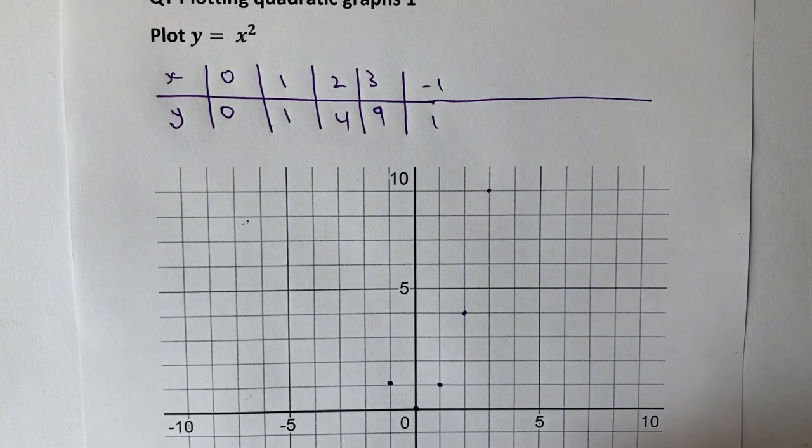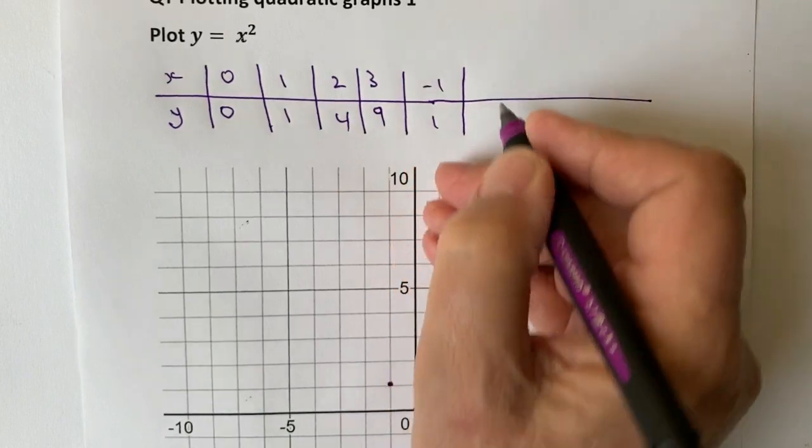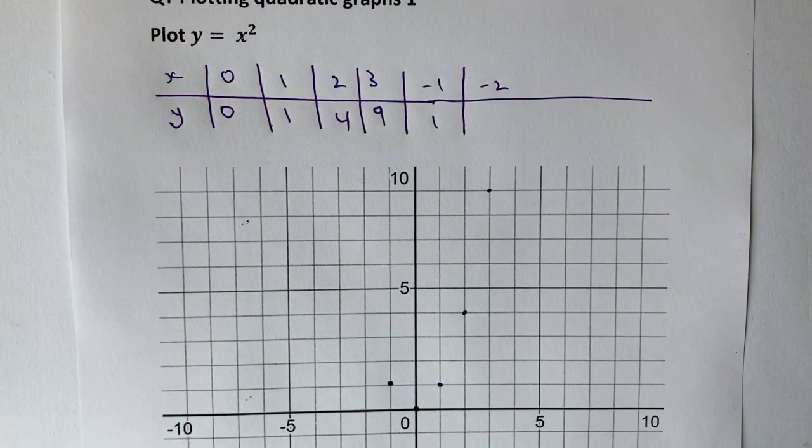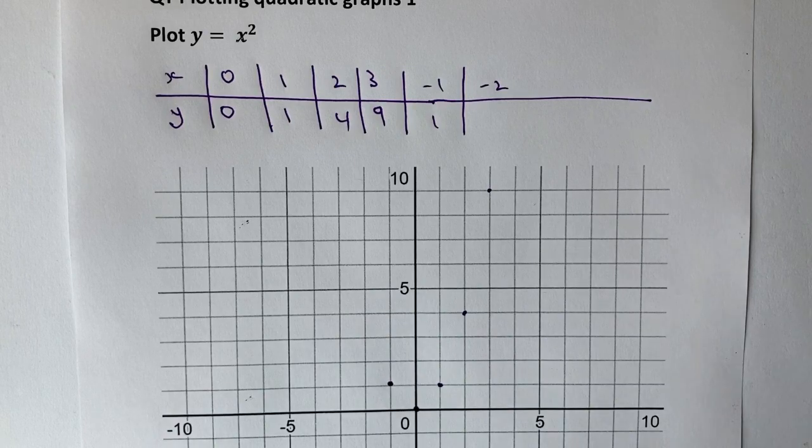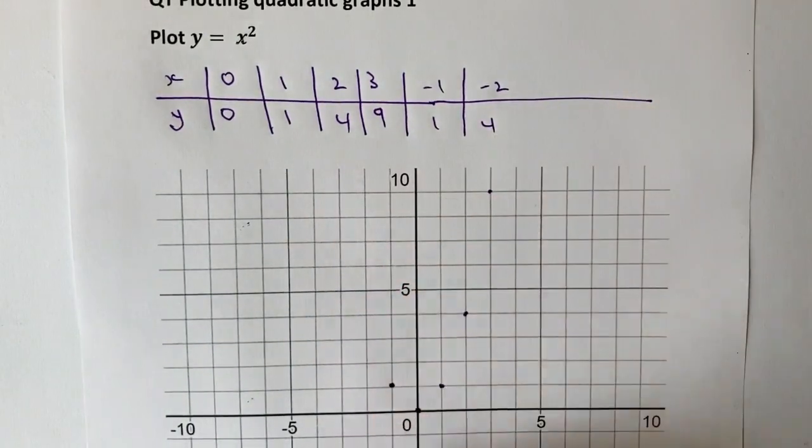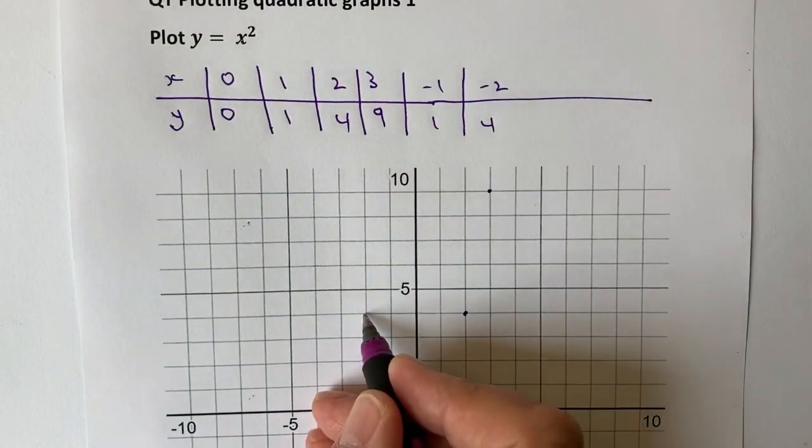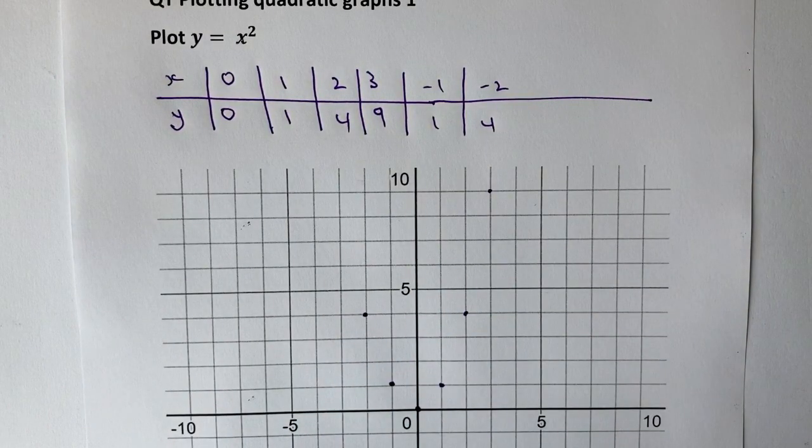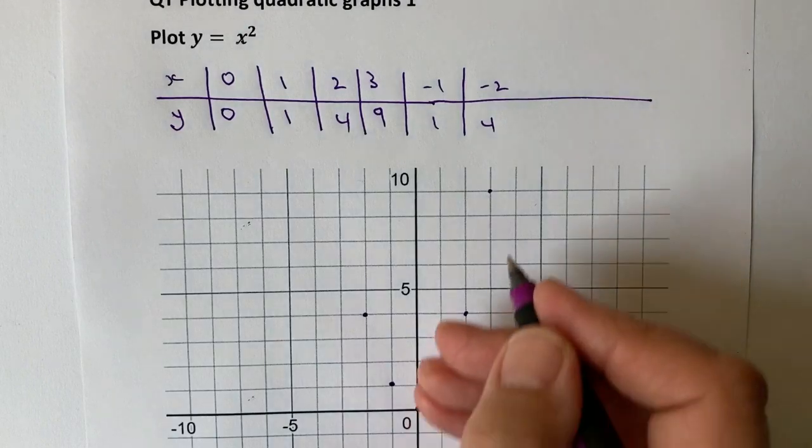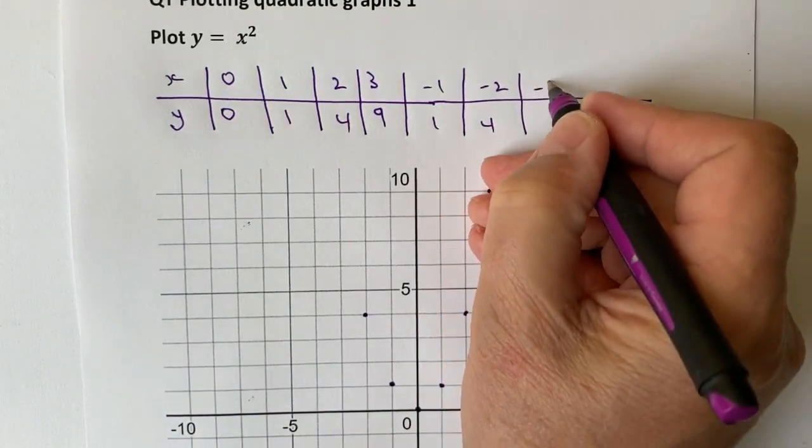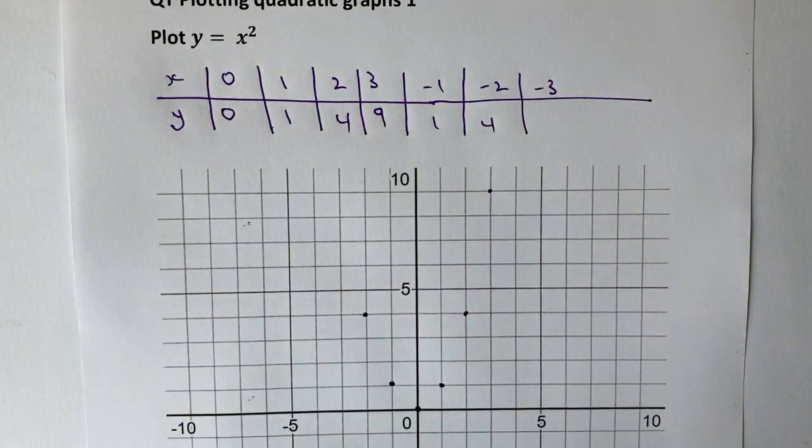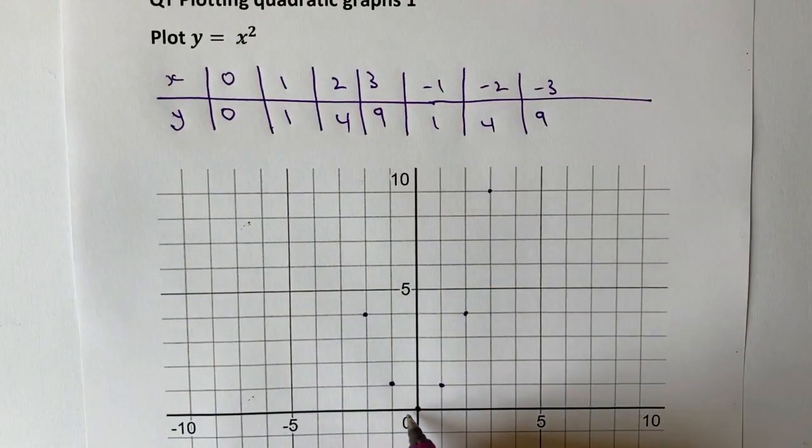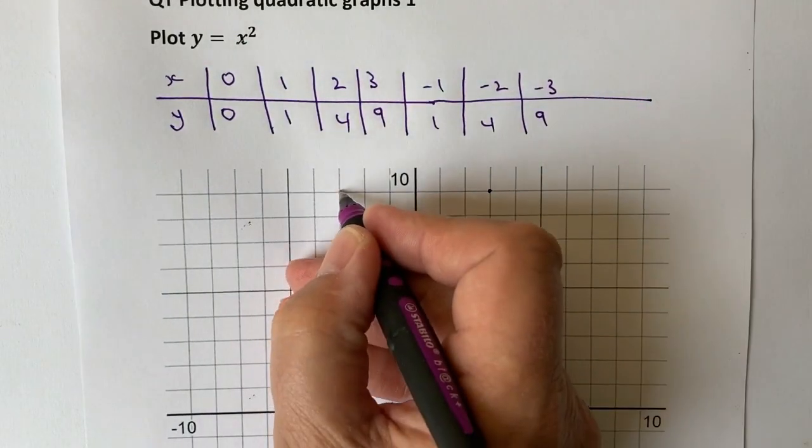Let's have a look now at minus 2. So I've got minus 2. Well, again, minus 2 squared is minus 2 times minus 2, which is going to be positive 4. So I've got 2 and 4. And you can see here it's mirroring along the y axis. So let's just check that for minus 3. I've got minus 3 squared is minus 3 times minus 3, which is 9. So minus 3 along to 9.